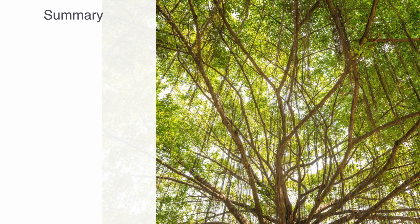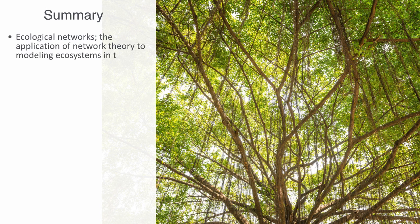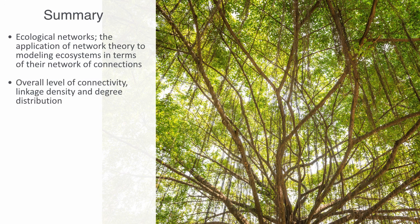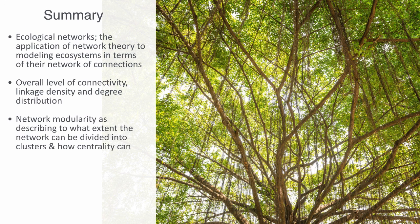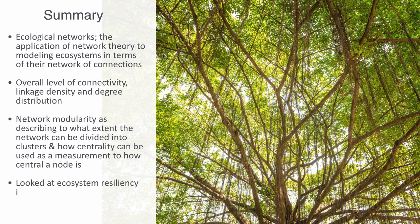In this video we've been talking about ecological networks — the application of network theory to modeling and analyzing ecosystems in terms of their network of connections. We talked about overall features including connectivity, linkage density, and degree distribution; network modularity as describing to what extent a network can be divided into highly interacting local clusters; and how centrality can measure how significant a node is within the system. Finally, we looked at ecosystem resilience in terms of network integrity, noting how connectivity can both enable robustness by enabling greater resource flow, and add vulnerability by giving rise to cascading food web disturbances.